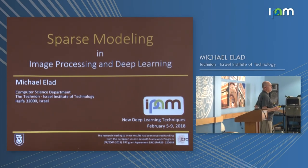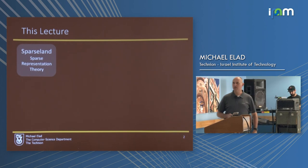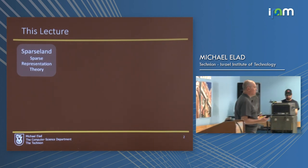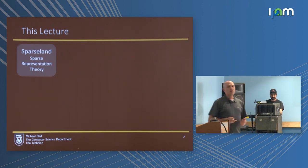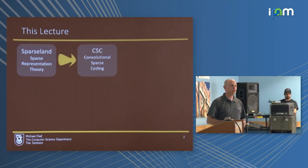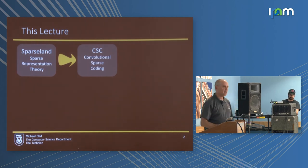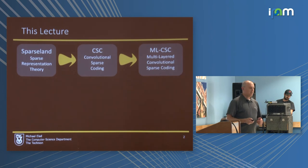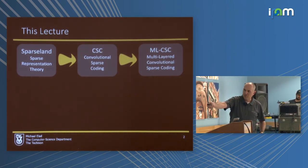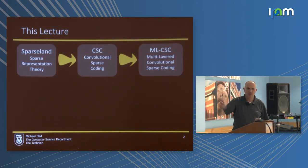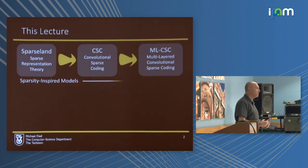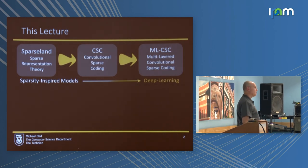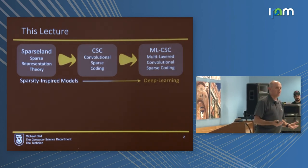My talk is on sparse modeling of data, what I will be referring to as sparse land. I'll start by describing the general story of sparse land and then turn to describe two special cases: convolutional sparse coding and a multi-layered version of this. With the migration from the general story to those two special cases, we will be building a connection from sparsity-inspired models all the way to deep learning. This is the main message of my talk today.